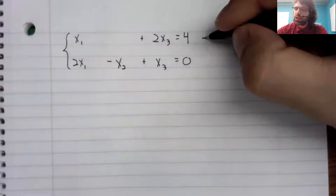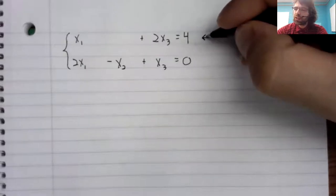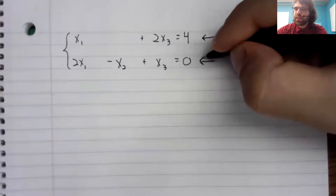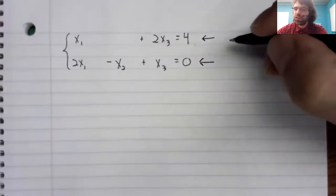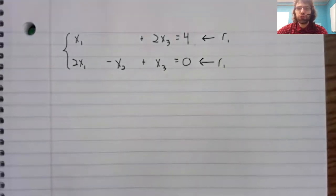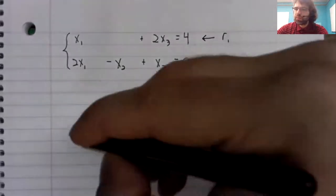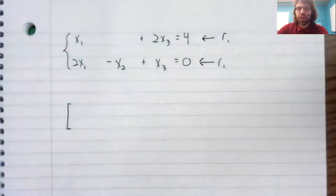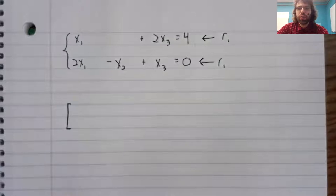Each equation in the system is going to correspond to a row of the matrix. So because we have two equations, we're looking for a matrix that has two rows.